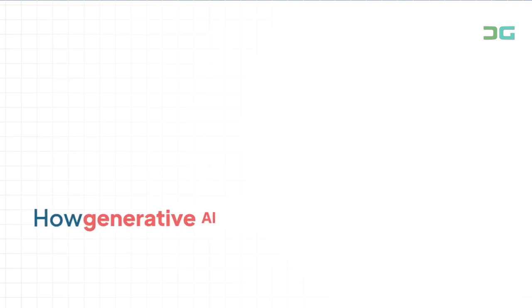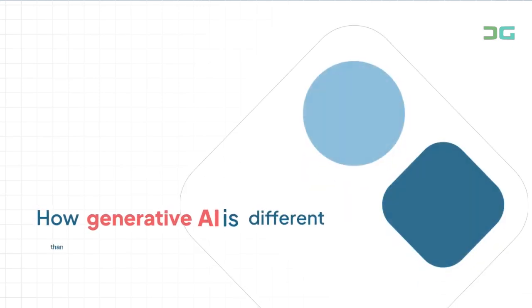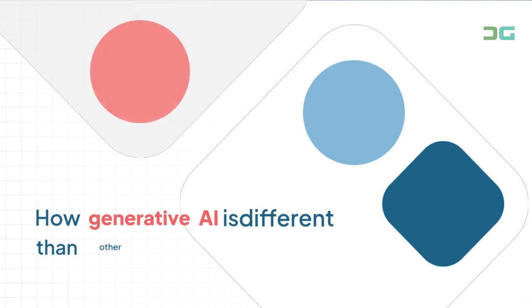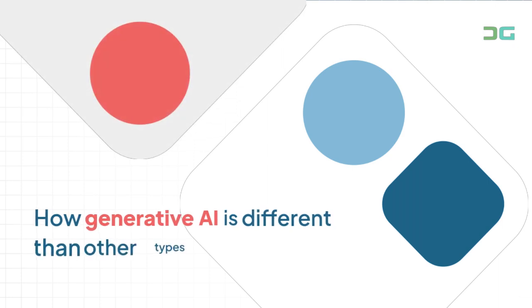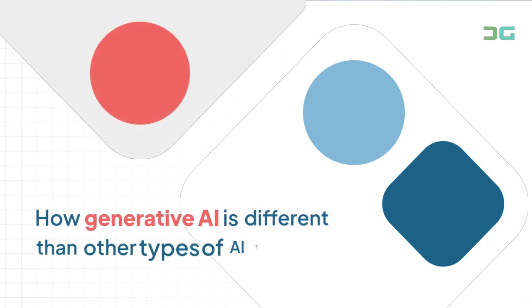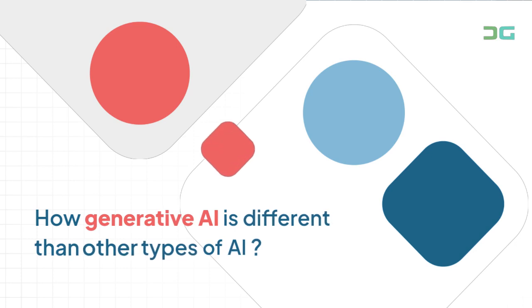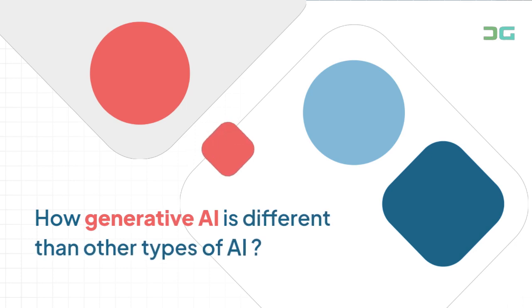Generative AI is a type of AI that, as this name suggests, generates new content. This is in contrast to other types of AI, like discriminative AI, which focuses on classifying or identifying content that is based on pre-existing data.